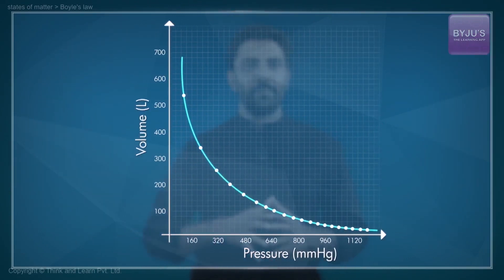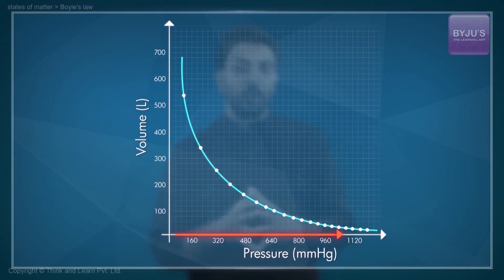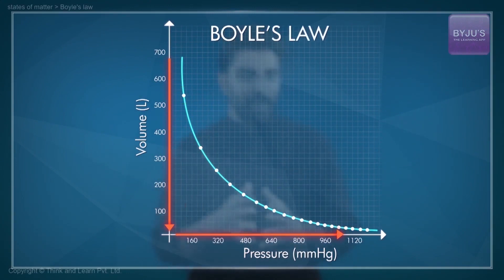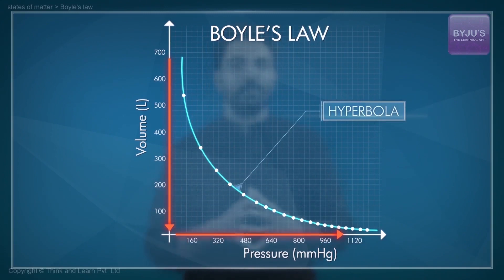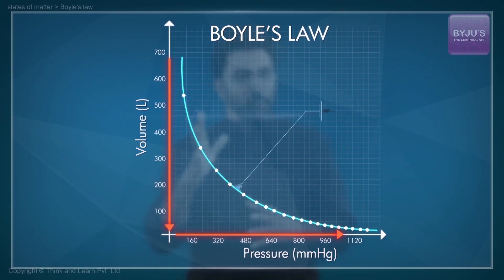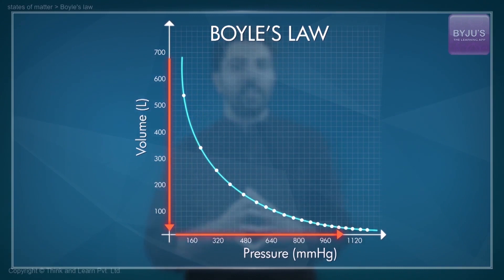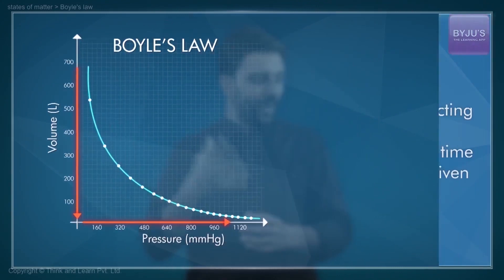Observe this graph. As we see, the increase in one variable causes a decrease in the other. This relationship is now known as Boyle's Law, and the curve is mathematically described as a hyperbola. Note that the amount of gas in moles N as well as the temperature T remain constant throughout the entire process. Such graphs where temperature is kept constant are referred to as isotherms.